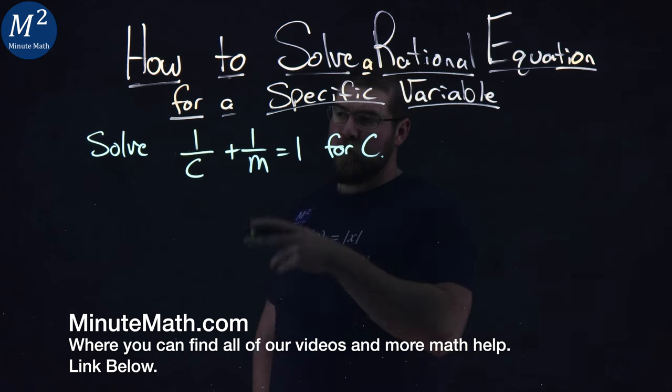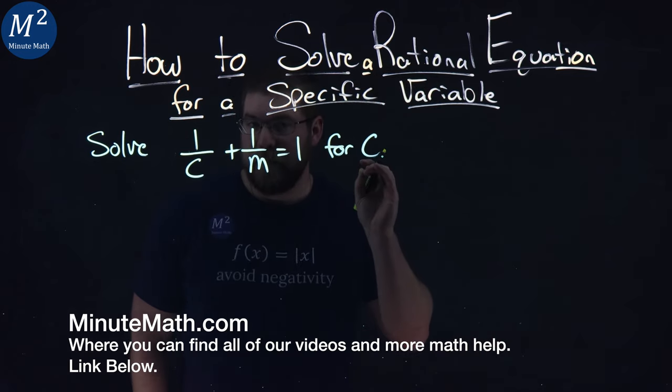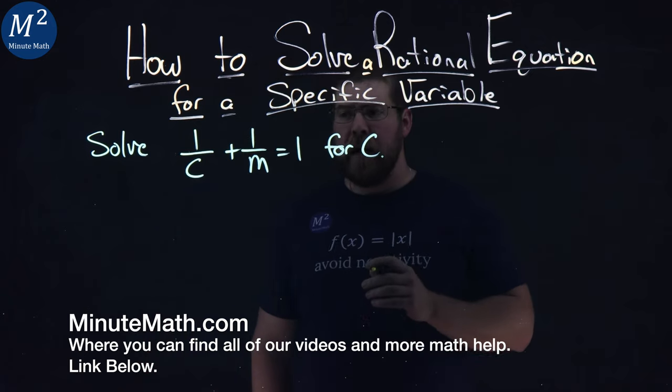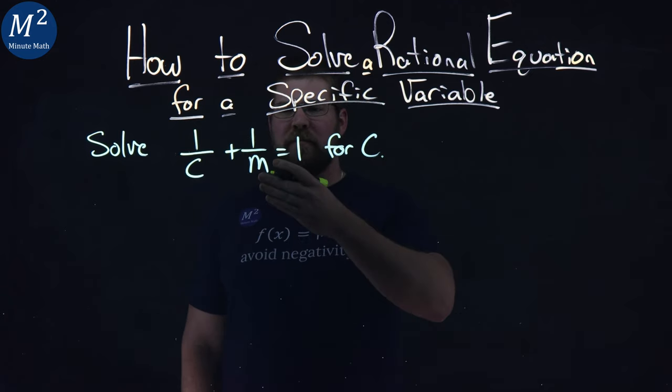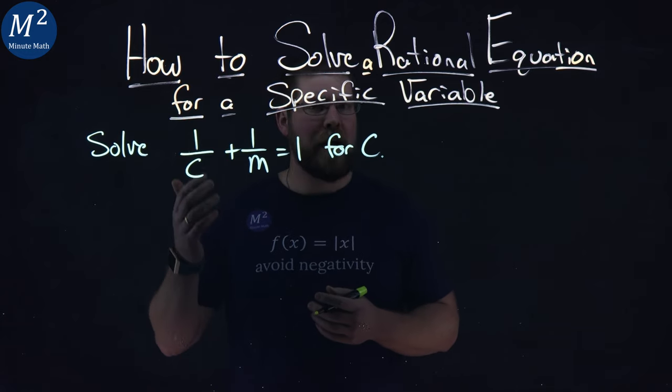We're given this problem right here: Solve 1/c + 1/m = 1 for c. Now, this is kind of difficult because we have two variables here, and we're trying to get one of them just by itself. We have a lot of fractions going on.